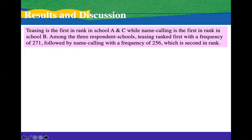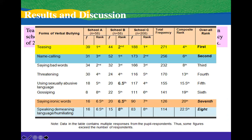Based on the results, teasing ranks first in schools A and C, while name calling ranks first in school B. Among the three respondent schools, teasing ranked first with a frequency of 271, followed by name calling with a frequency of 256, which is second in rank. The table shows the frequency and rank for school A, school B, and school C: teasing ranked first in school A and also first in school C, while name calling ranked third in school A, first in school B, and second in school C.